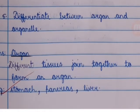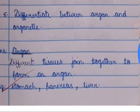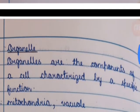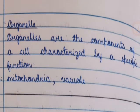Question 5: Differentiate between organ and organelle. Answer: Organ — different tissues join together to form an organ. Example: stomach, pancreas, liver. Organelle — organelles are the components of a cell characterized by a specific function. Example: mitochondria, vacuole.